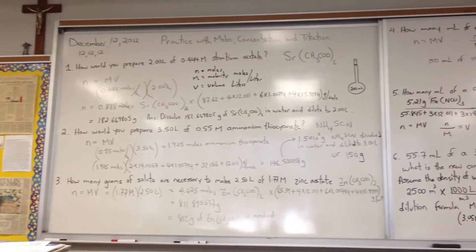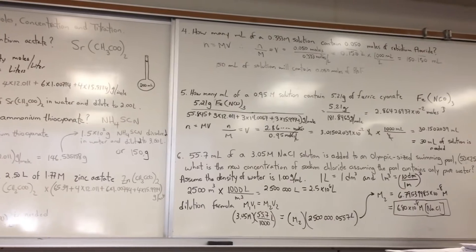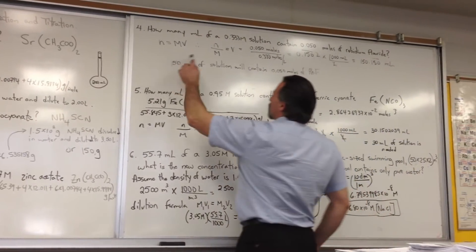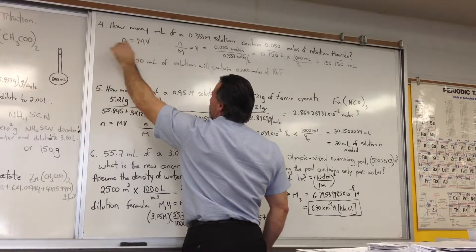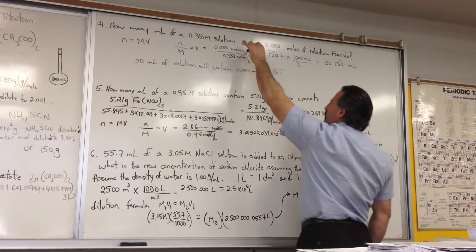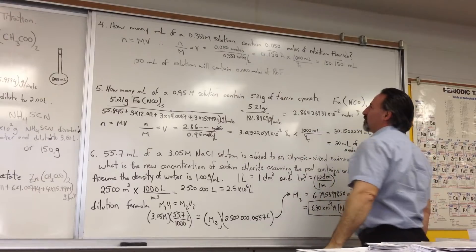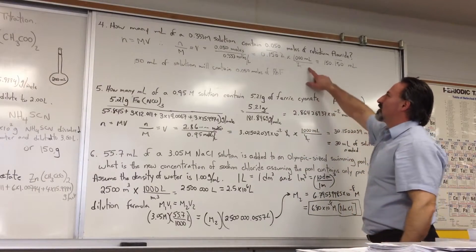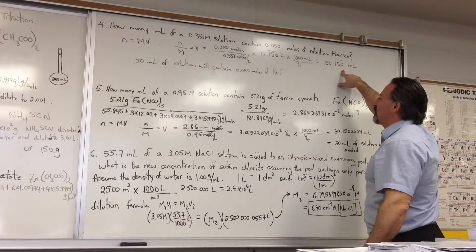Fourth question. How many mls of 0.33 molar solution contain 0.05 moles of rubidium fluoride? We use the same formula, but now we're solving for the volume. So I've transposed the M to that side. It becomes a division. N over M is equal to the volume. Here's the number of moles. Here's the concentration. That gives us a value of 0.15 liters. We convert it to milliliters by multiplying by 1,000. The answer is 150.15 recurring. That's what that bar means over the number.